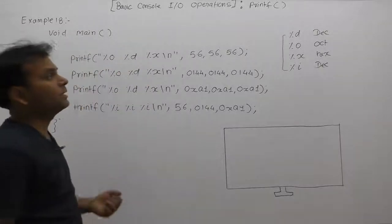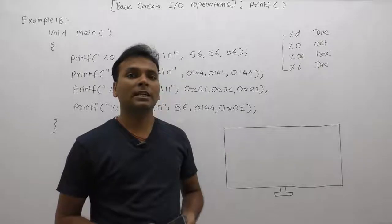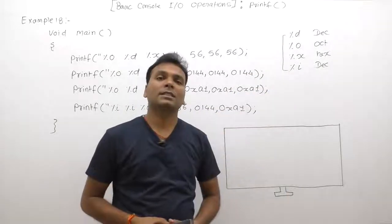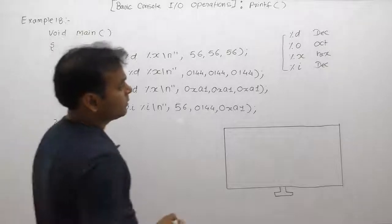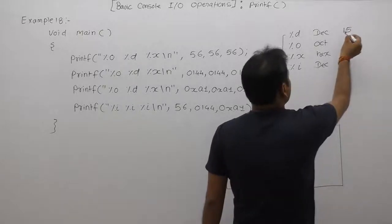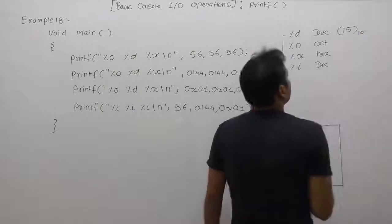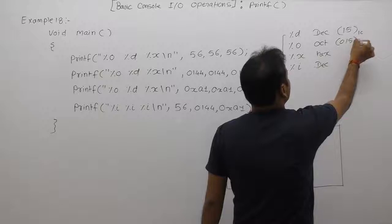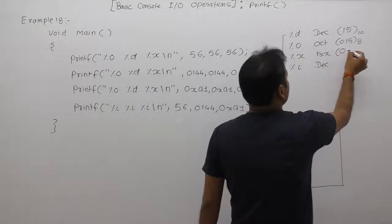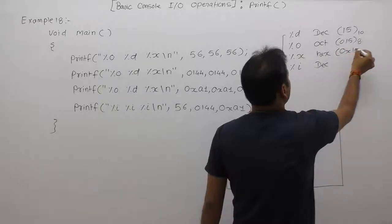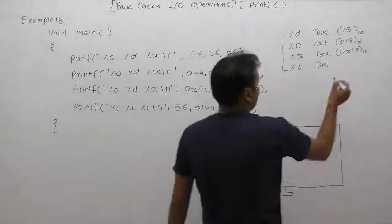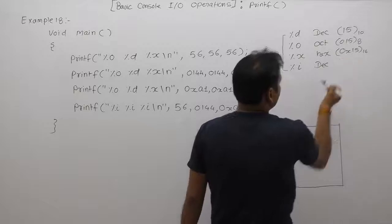There is no difference between %i and %d with respect to printf. We already discussed the difference between %i and %d during scanf functions. Any integer number is by default represented in decimal (base 10). If any integer number starts with 0, it is known as octal. If it starts with 0x, it is hexadecimal (base 16). But with %i, there is a specific rule.